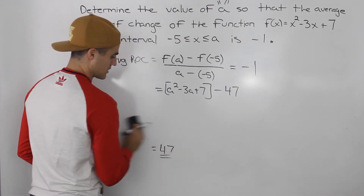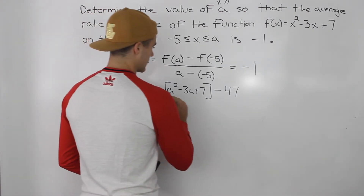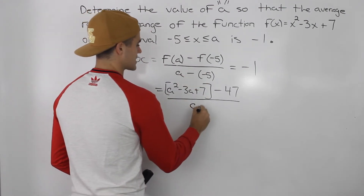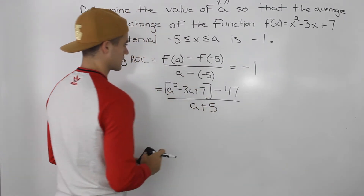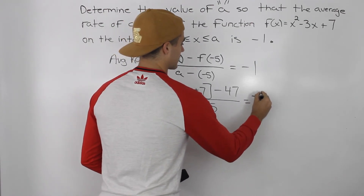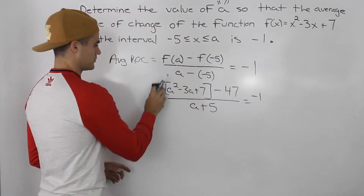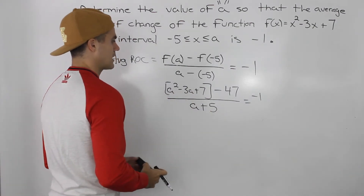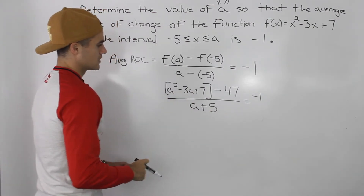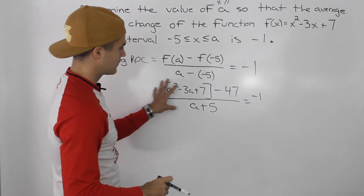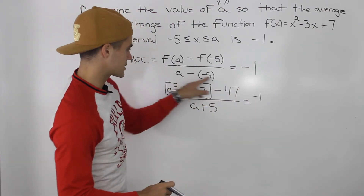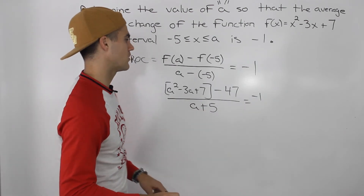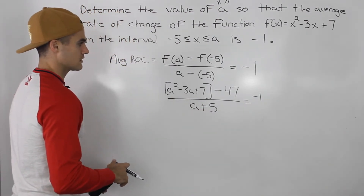This is all over a minus negative 5, which is the same as a + 5, and this all equals negative 1. So notice we have this expression on the left side — one fraction equaling negative 1. Let's do a little simplifying.